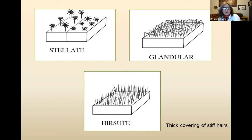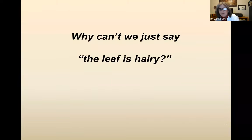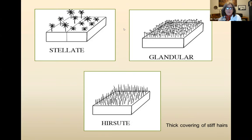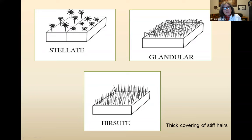Sticking on the theme of hairs — here are a few kinds. Stellate hairs are really cool little things: they're star-shaped, as the name implies. They can either be on a little stalk with a little star on top, or what we would call sessile or adnate to the stems — just flat on the stem or leaf. Another type of hair is called a glandular hair, which again has a little stalk and a clear, sometimes colored, translucent ball on top.